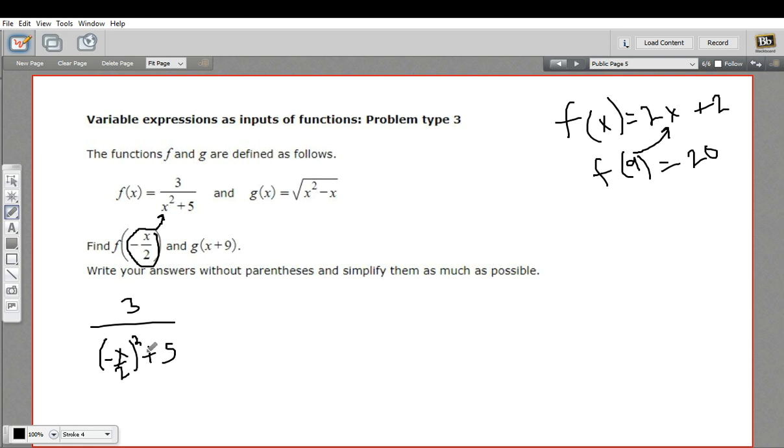Calculate and simplify as much as possible. I'm going to square this first, so this would be 3 over, well, a negative thing squared is going to be a positive, and then the fraction squared is just the top squared over the bottom squared. So this is going to be x squared over 4, a positive x squared over 4, and plus 5.